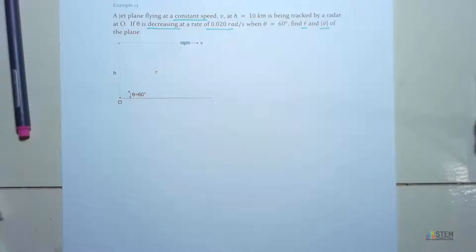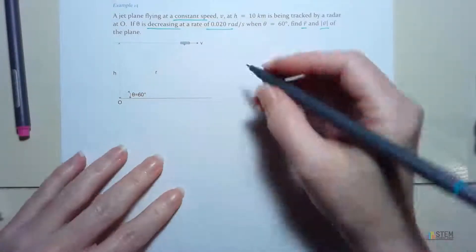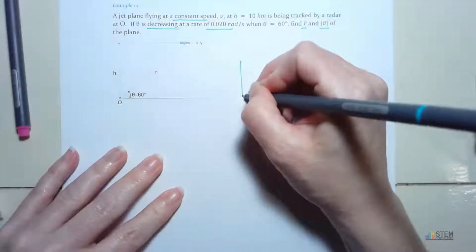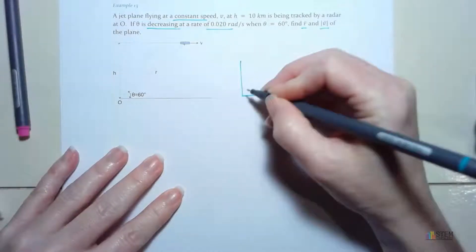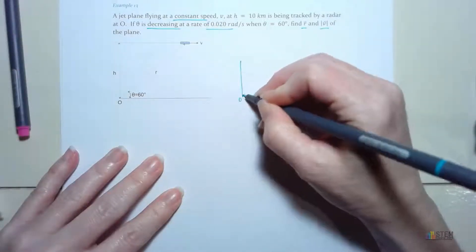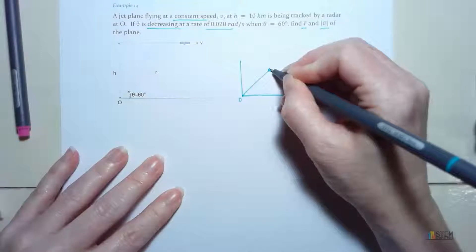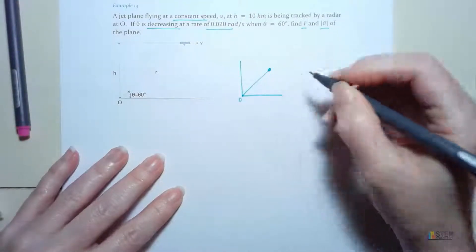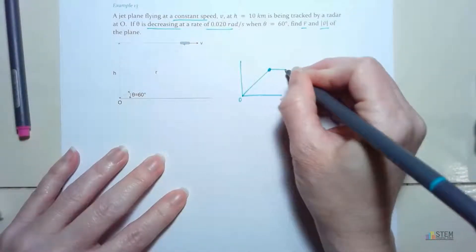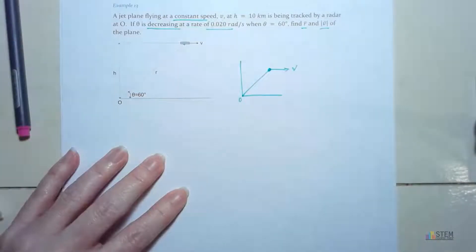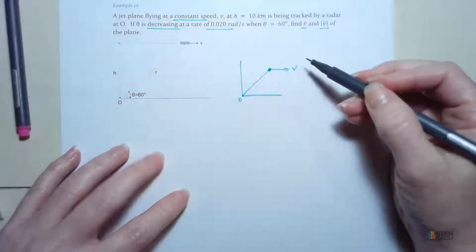Now to get started, first thing you should do is establish your coordinate system. That's what I always do first. So let's go ahead and do that. Let me redraw this picture here. So here's O, and then I'm going to be out here. Here's my plane right here, this little dot. And I've got velocity. Looks like that.